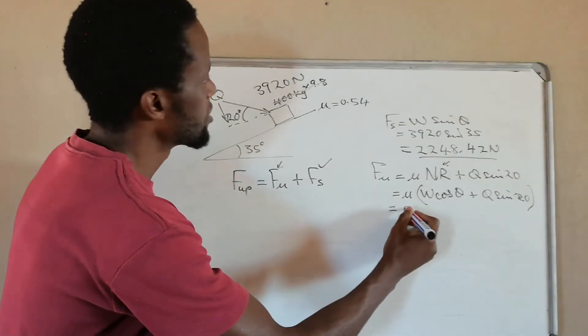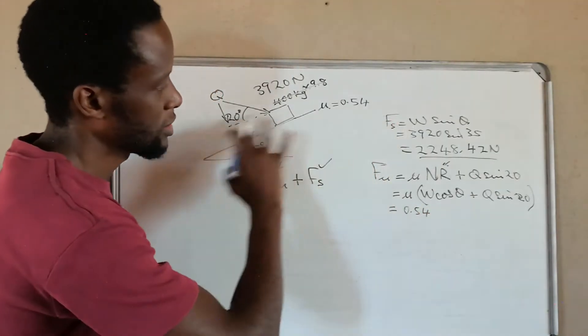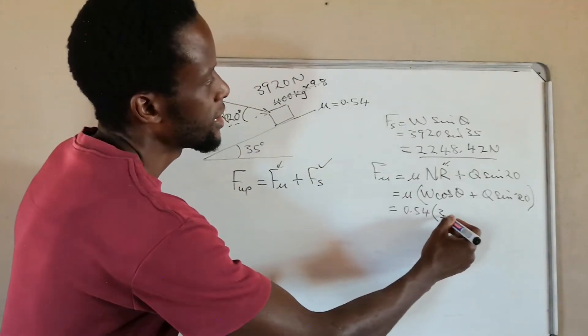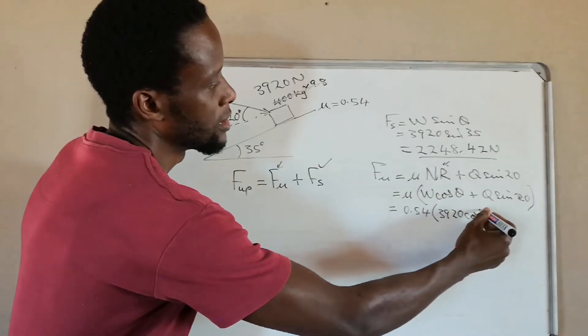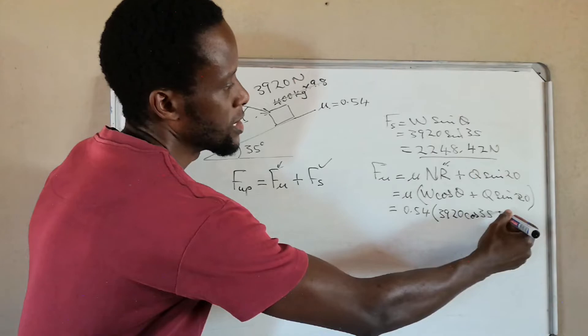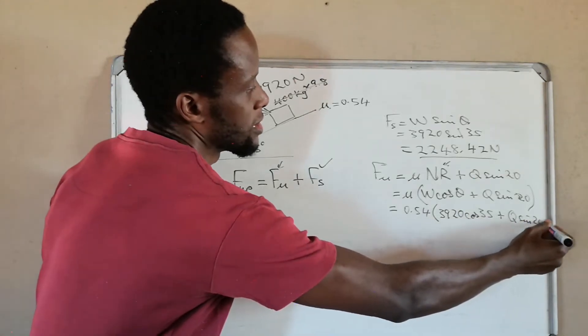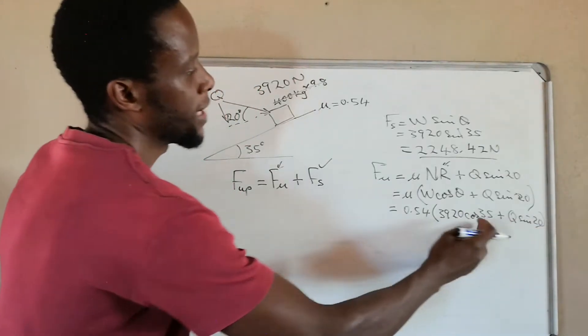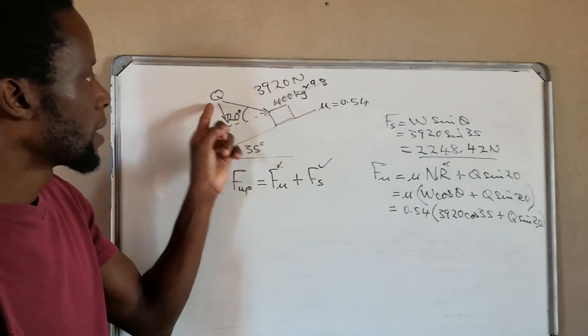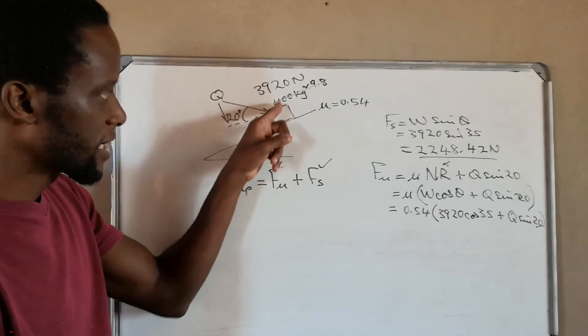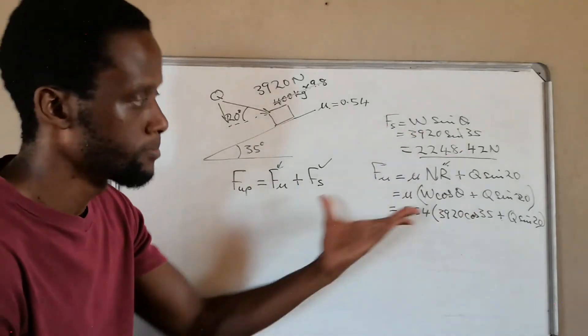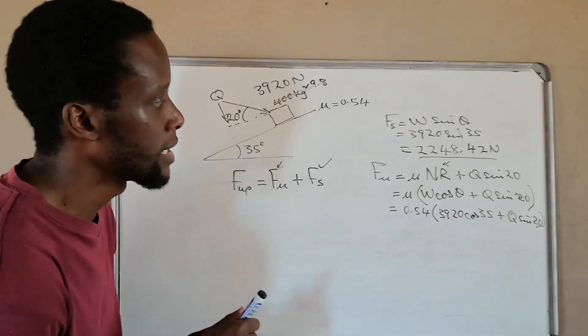We have 0.54, that is the coefficient of friction of that surface. Our weight is 3920 cos our incline 35, then we say plus q sine 20. Okay, remember again the reason why we are adding is because the force q is pushing this object against the surface. That's the reason why we add. If it was the other way around would be minusing, but for this example we are adding to that.